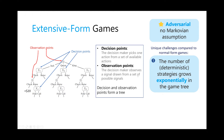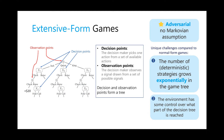A second reason extensive form games are harder is that because there are observation points, the environment has some control over what part of the decision tree is reached, making exploration of the decision space much harder. In rock paper scissors you control what action you pick, so you can always put some probability on all actions and guarantee exploration. But in extensive form games, if your opponent after a certain point always raises, you might never see what happens when you check.